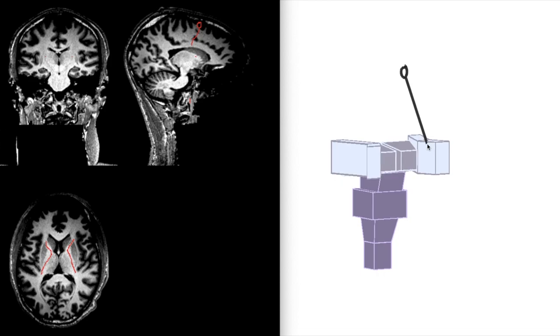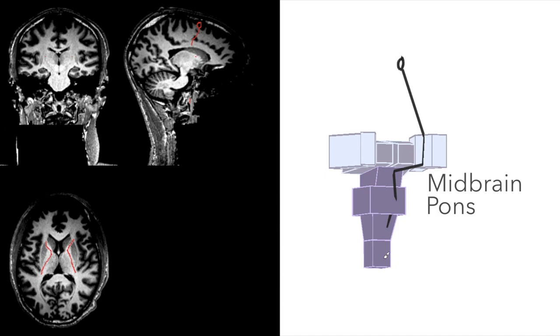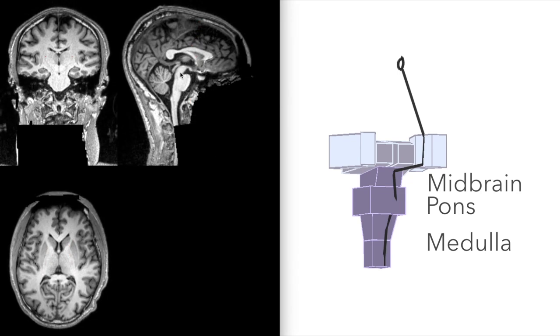Our axon then heads for the brain stem, this part here. It runs through the front part of the midbrain first, then through the pons, then through the front part of the medulla oblongata. Let's go through that in our MRIs now. There's the midbrain, there's the pons, and there's the medulla leading to the spinal cord.